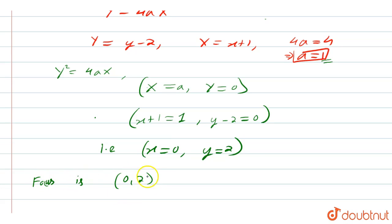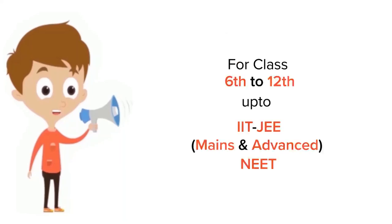That means the reflected ray always passes through the focus. That means this will definitely pass through (0, 2). Thank you.